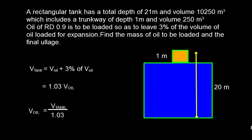A rectangular tank has a total depth of 21 meters and volume 10250 cubic meters, which includes a trunkway of depth 1 meter and volume 250 cubic meters. Oil of RD 0.9 is to be loaded so as to leave three percent of the volume of oil for expansion. We need to find the mass of oil to be loaded and the final LH.